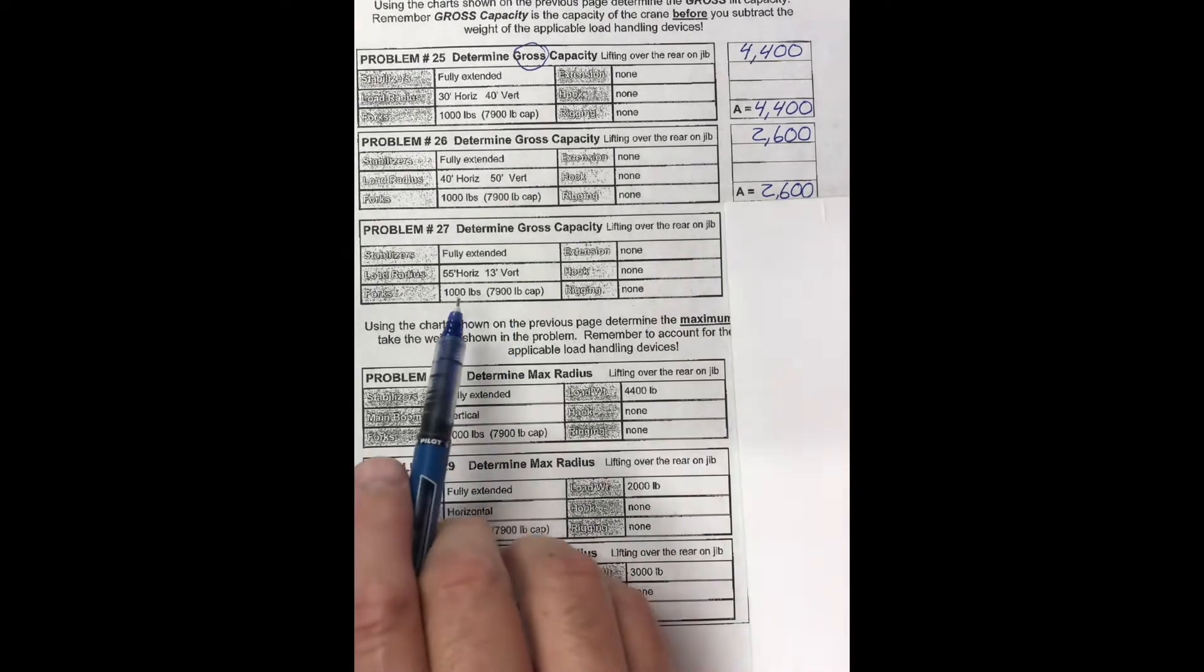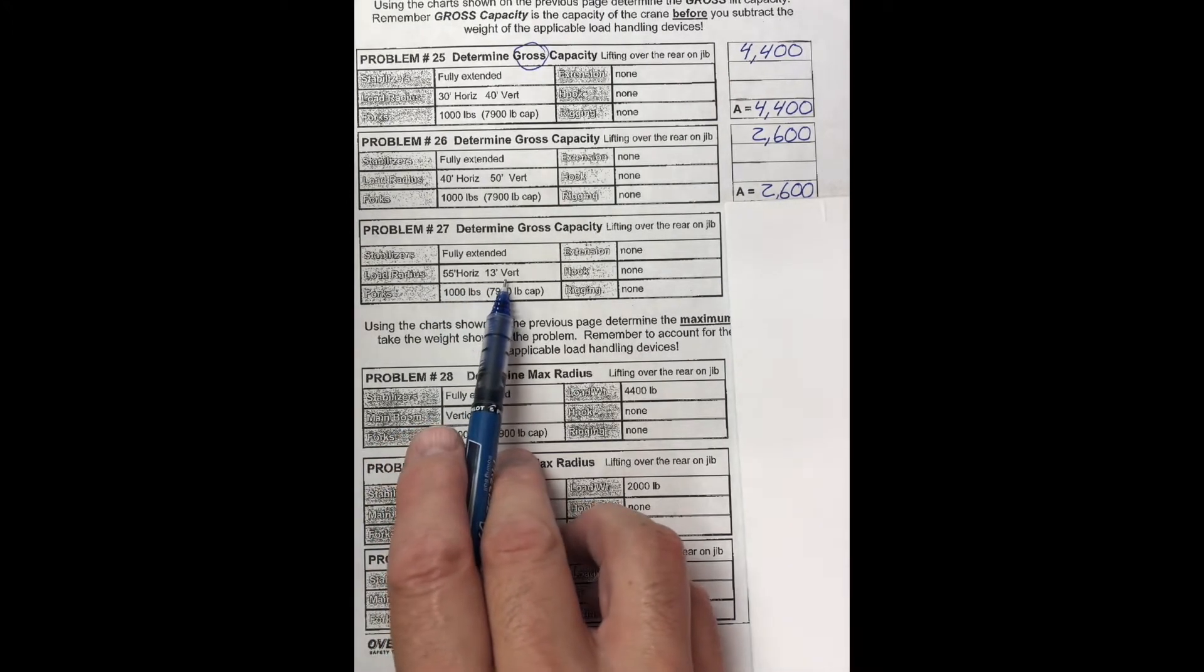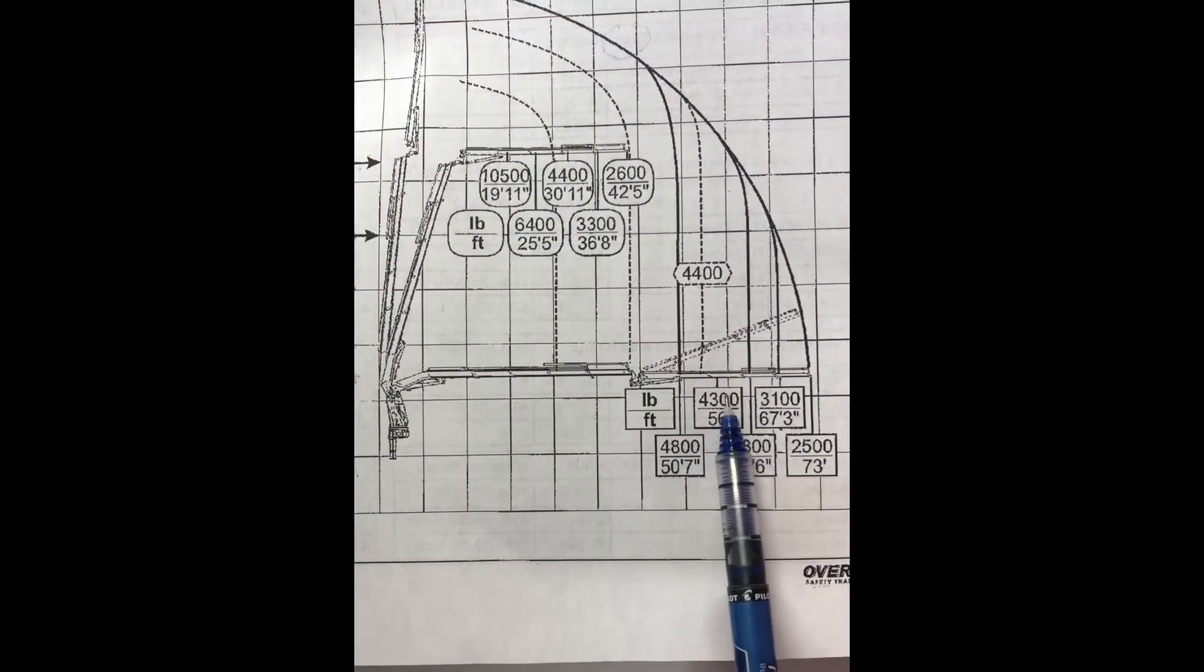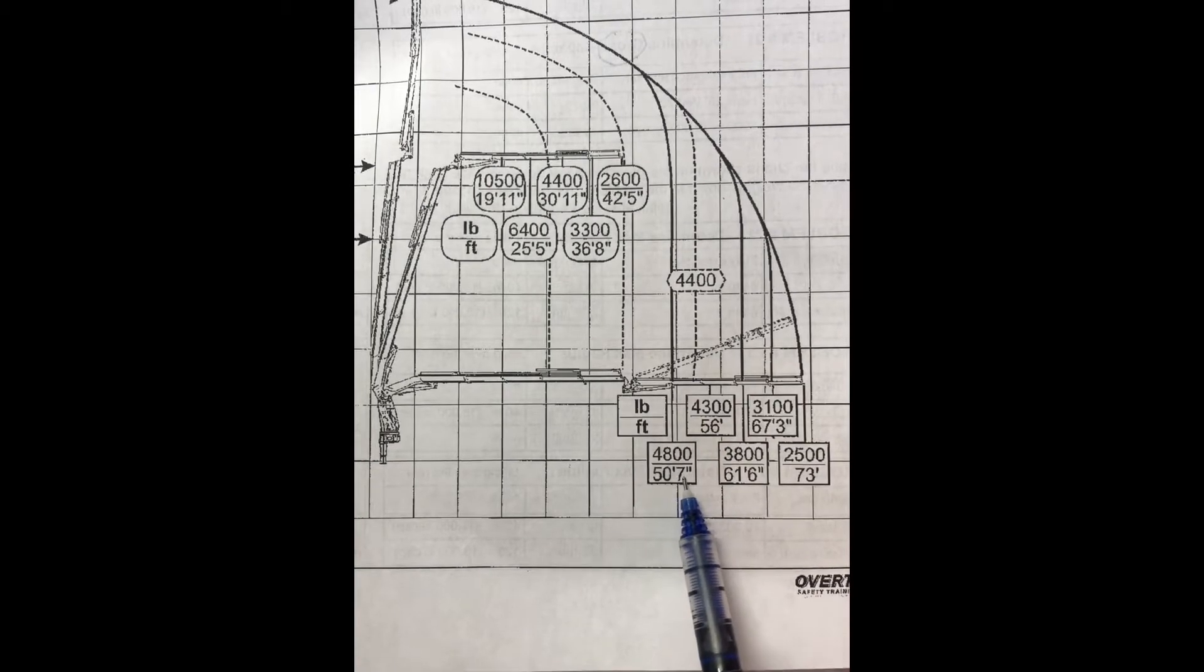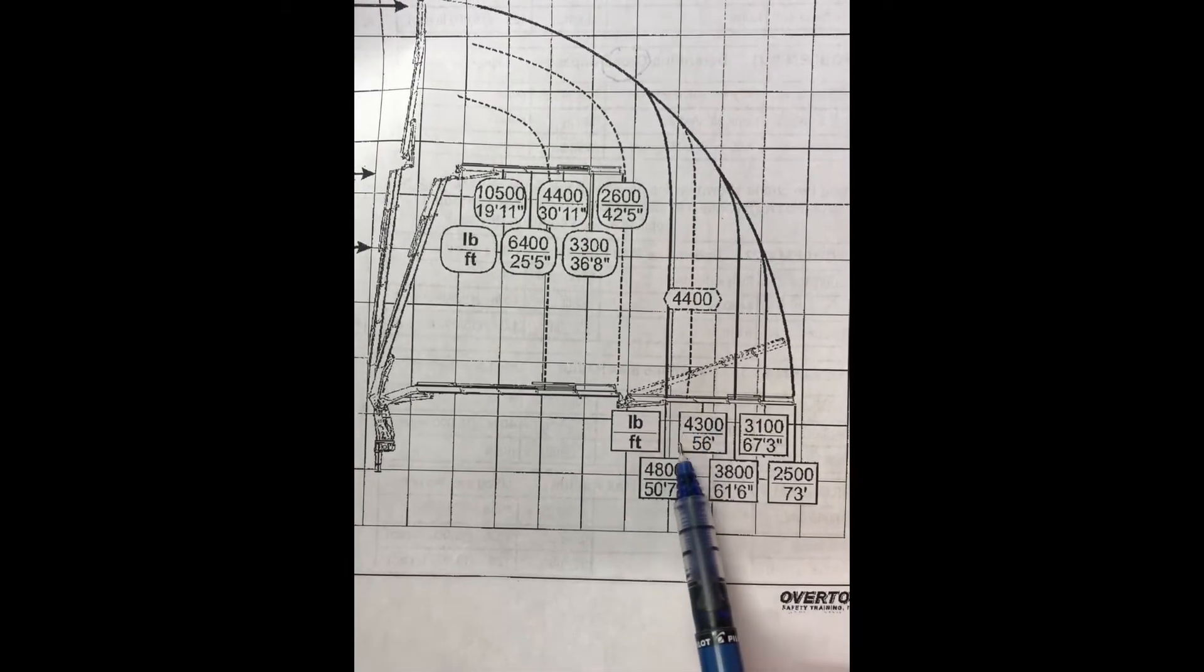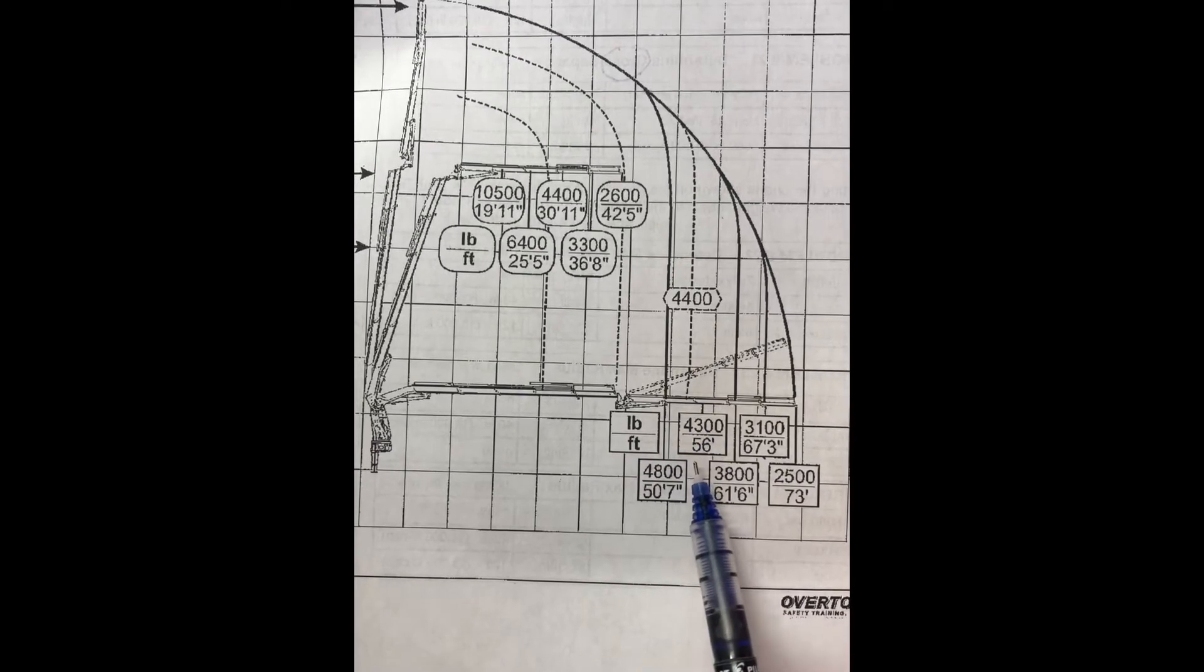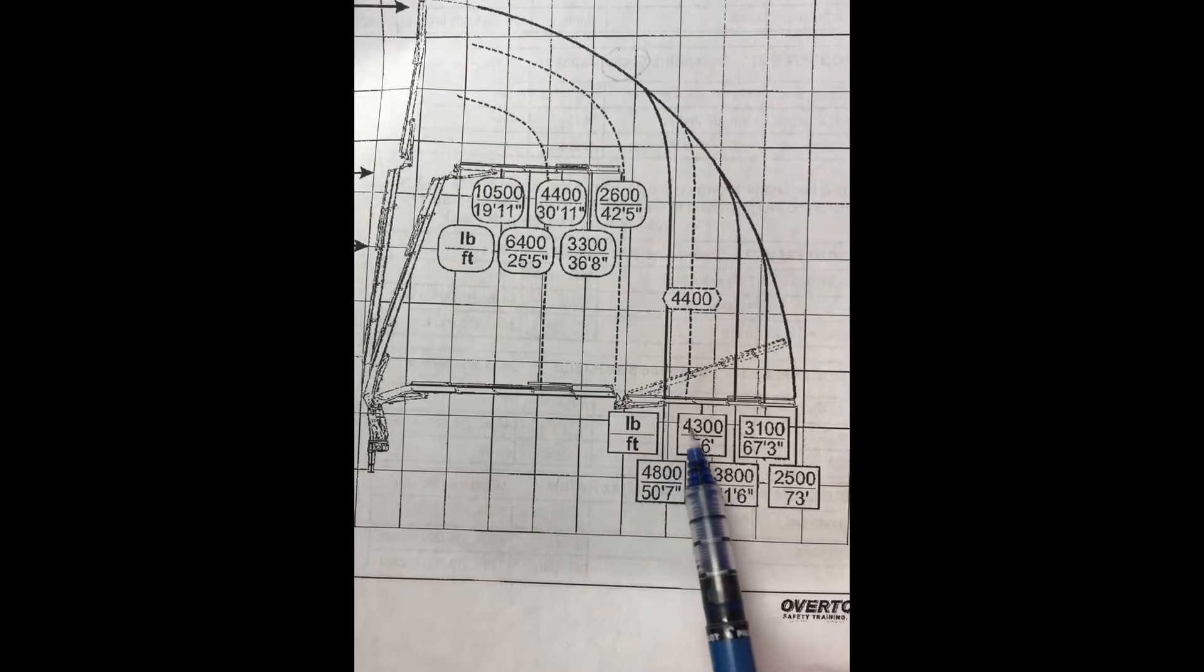Next we have 55 feet horizontal, 13 feet vertical. 55 horizontal, 13 vertical. Here's our 13. So 55, got a 56 here. 50 foot 7 inch. 55 is in between these two. It's in this zone. So our answer would be 4,300 pounds for gross capacity. Because it's in that zone. 4,300 pounds.